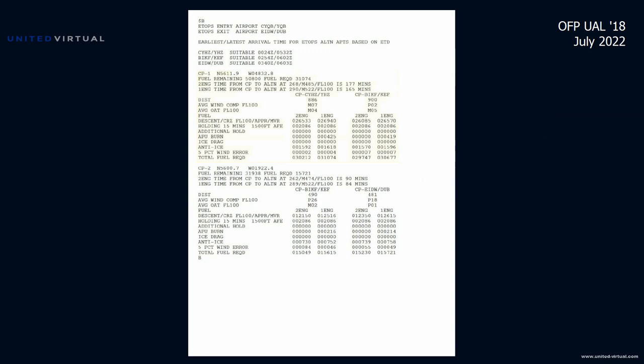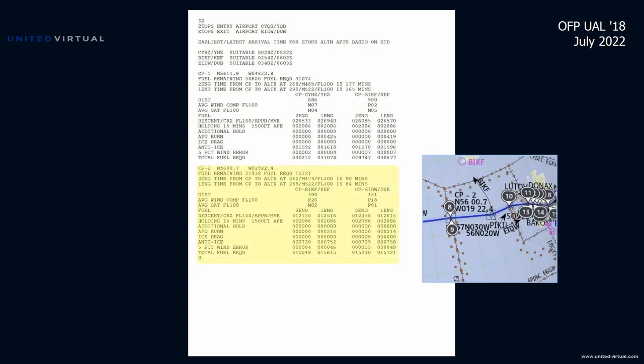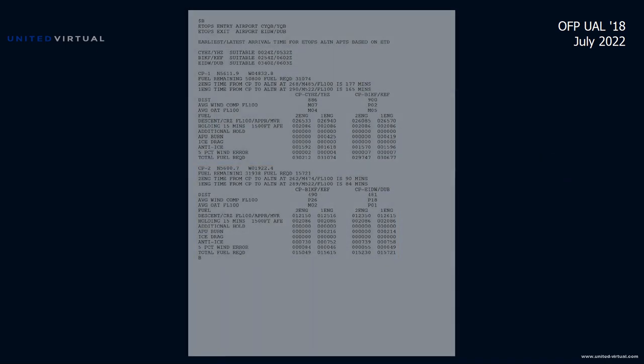Once past critical point one, we no longer divert to Halifax — we continue to Keflavik. Between critical points one and two, any diversion goes to Keflavik. Fuel at critical point two is 31,938 pounds, with 15,721 pounds required to continue. Critical point two is at N56.7 W192.4. From there, it's 90 or 84 minutes to either airport depending on engine status. Distance to Keflavik at critical point two is 490 miles; after critical point two, Dublin is 481 miles.